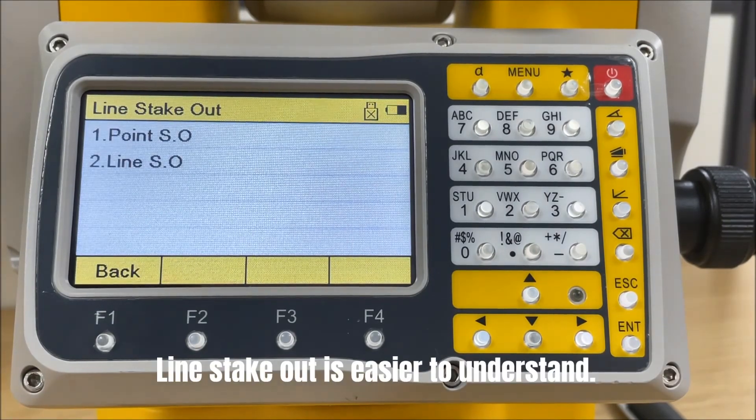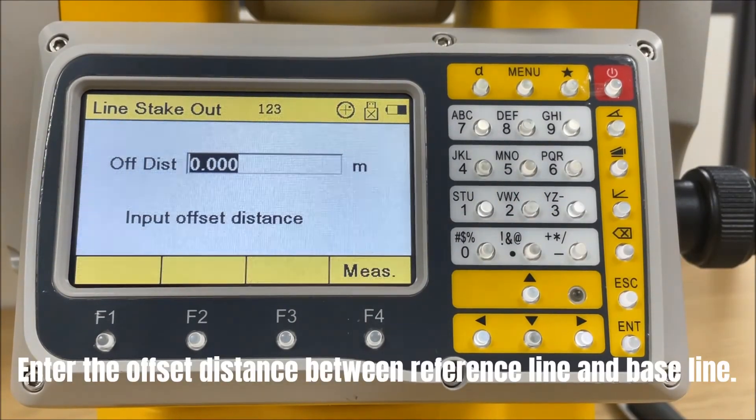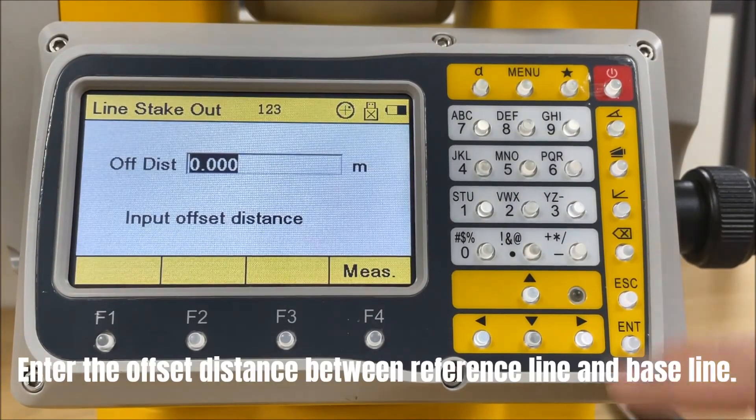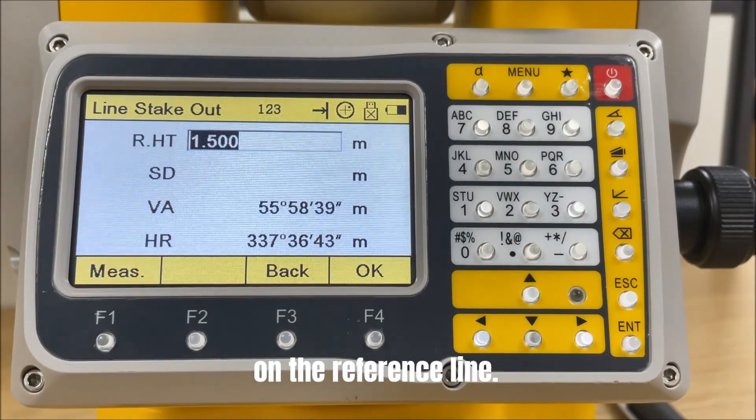Line stake out is easier to understand. Enter the offset distance between the reference line and baseline. N3 will give you guidance to stake out all the points on the reference line.